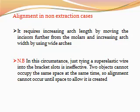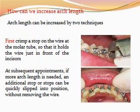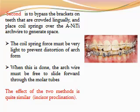Alignment in non-extraction cases requires increasing arch length by moving the incisors further from the molars and increasing arch width by using a wider arch. Arch length can be increased by two techniques. First, a crimp stop on the wire at the molar tube holds the wire in front of the incisors. Second, bypass the bracket on teeth that are crowded lingually and place a coil spring over the NiTi arch wire to generate space.